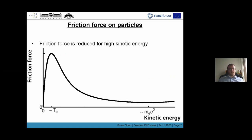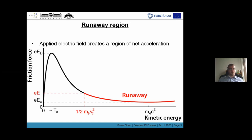Runaway electrons in plasma can appear because the friction force experienced by the particles is reduced as the particles gain velocity if they are above the thermal kinetic energy. This means that if an electric field larger than some critical electric field is introduced to this particle population, it will create a region of net acceleration above a critical velocity boundary. Any particles inside this runaway region will accelerate to ultra-relativistic energies, hence running away.